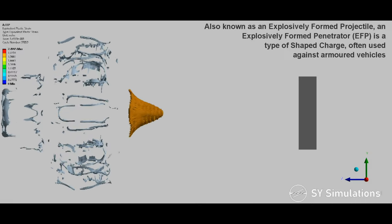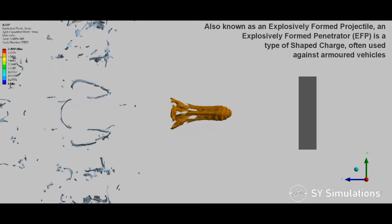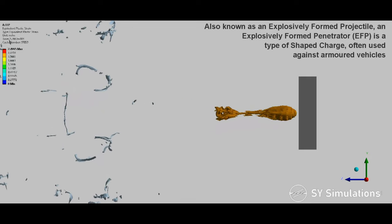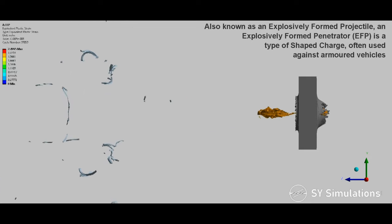Also known as an explosively formed projectile, an explosively formed penetrator is a type of shaped charge often used against armored vehicles.